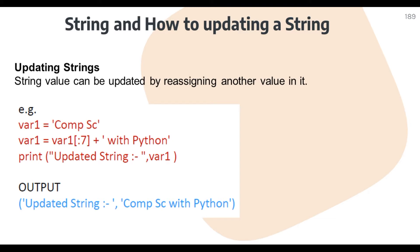Now we are going to understand updating a string. A string can be updated by reassigning another value to it. We reassign the value because strings are an immutable type — you should know what immutability of an object means. For example, variable1 equals 'comp sc', that is 'computer science'.